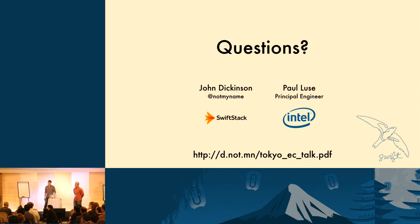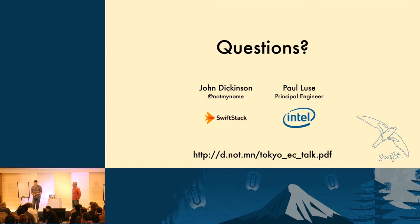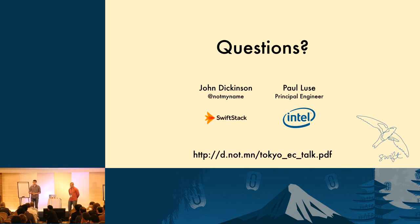A follow-up on durability: the concern was about guaranteeing data is there before you get back a 200 status after a put. Right now with Swift, we will not return a successful response to a write until, in replication, we know it has been durably flushed to disk in at least a quorum — more than half of the number of replicas. With erasure codes, we do something very similar — making sure it has been durably flushed all the way to the drive for a quorum. You have the same basic characterization: after you get a successful response, the cluster is still able to withstand a hardware loss and still have your data.